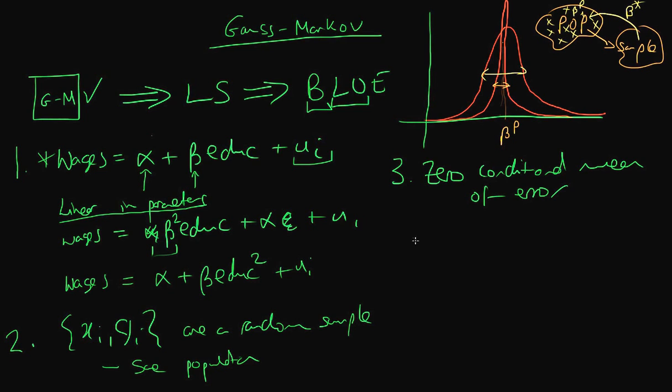So what does this actually mean? Well mathematically it means that the expectation of our error term in our population given our X term which in this case would be education has got to be equal to zero. But what does that actually mean practically? Well it means that if I know someone's level of education that does not help me to predict whether they will be above or below the average population regression line. So that's what it means for there to be a zero conditional mean of error. And this is perhaps the most important of the Gauss-Markov assumptions for reasons which we'll come on to later.